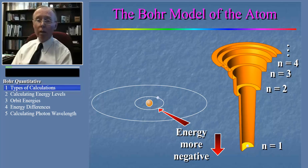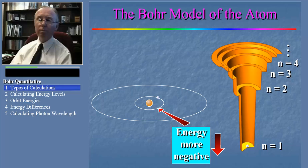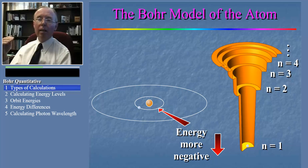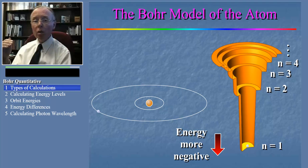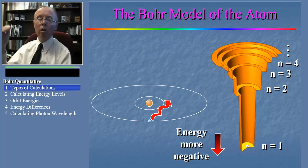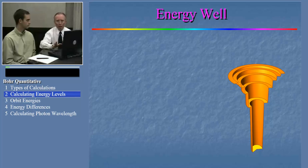Now that we've been introduced to the Bohr model, we're ready to do some calculations. We're going to focus on the energies of the electrons as represented in the energy well. Keep in mind that the energy of the electron gets more negative as it goes deeper in the energy well. We'll be able to calculate the energies of individual electron orbits and also the energies of photons which are absorbed or released when the electron jumps between orbits. We're going to dig deeper into this energy well idea and see how it can be used to do quantitative problems.